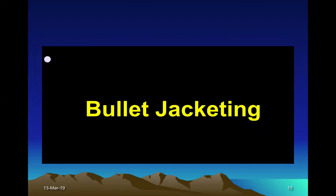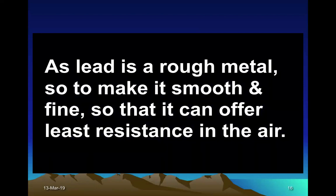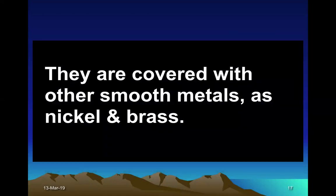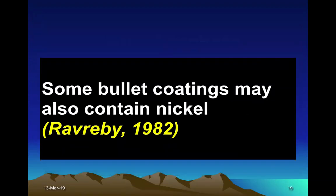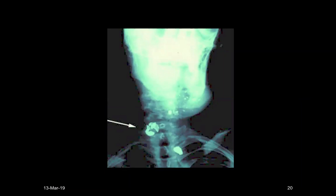Regarding bullet jacketing: lead is a rough metal, so to make it smooth and fine and to offer least resistance in the air, it is covered with other smooth metals such as nickel and brass — this is the jacketing. Bullet jackets are usually made of brass: 90% copper and 10% zinc. Some are of ferrous alloy and sometimes aluminium. Some bullet coatings may also contain nickel. This radiograph shows a bullet passing through bones, with the jacket left behind as the bullet moved ahead.